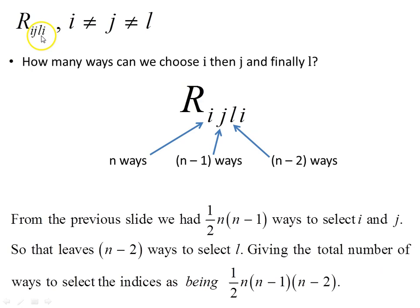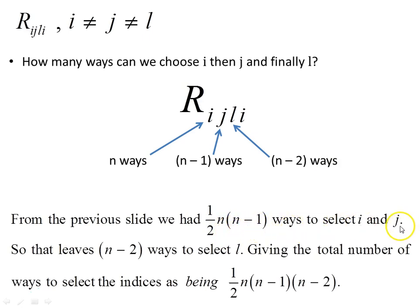For R_ijli where i is not equal to j and not equal to l: from the previous case, there are one half times n times n minus 1 ways to select i and j. That leaves n minus 2 ways to select l, giving a total of one half times n times n minus 1 times n minus 2 independent components for this case.